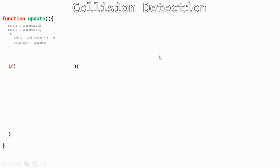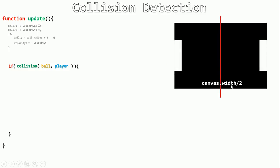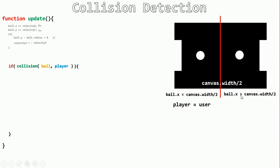In the update function, determine which player is hitting the ball. If ball.x is less than canvas.width divided by 2, the player is the user; otherwise the player is the computer. Store this in a variable called player, then call collision(ball, player) inside an if statement.